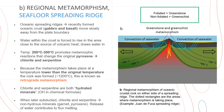Our second example is regional metamorphism along seafloor spreading ridges. This is where you find recently formed oceanic crust moving slowly away from the plate boundary. Due to this process, water within the crust is forced to rise in the area closest to the source of volcanic heat, and this draws water back in, creating a convection of seawater. Temperatures of 200 to 300 degrees Celsius are perfect to promote metamorphic reactions that change pyroxene to chlorite and serpentine.